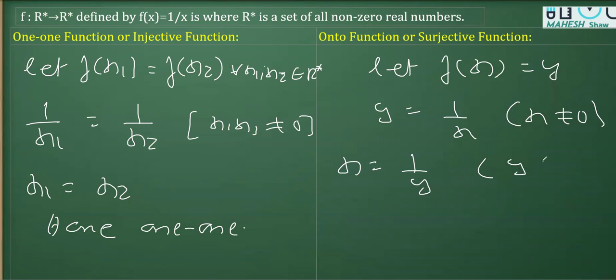The domain y cannot be zero as already mentioned. For every y that belongs to R*, all real numbers except zero, if I replace this y with any real number except zero, we get x. One over a real number will be an x, which is a real number except zero.